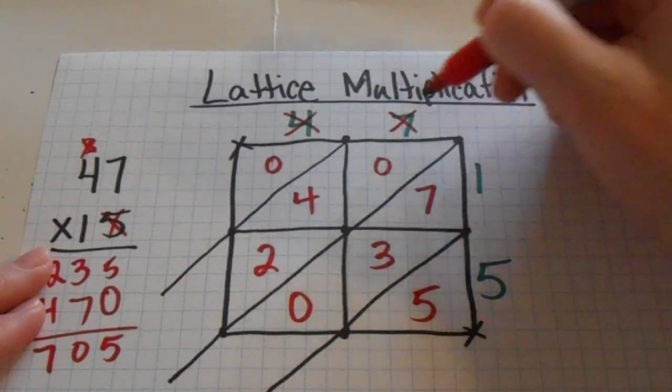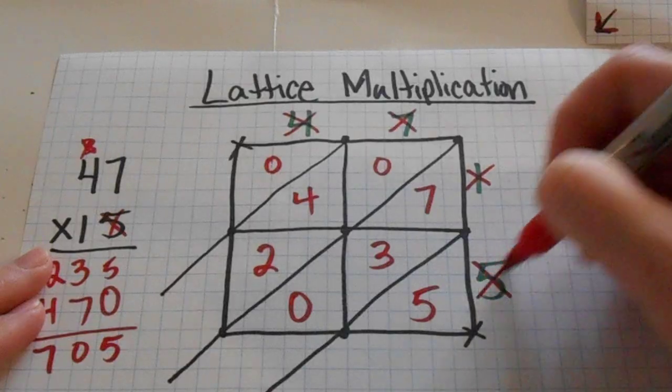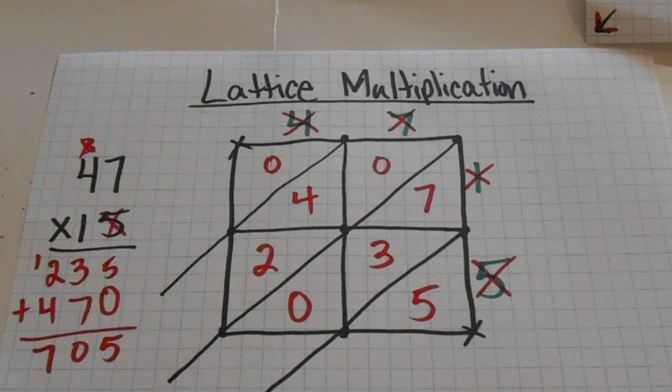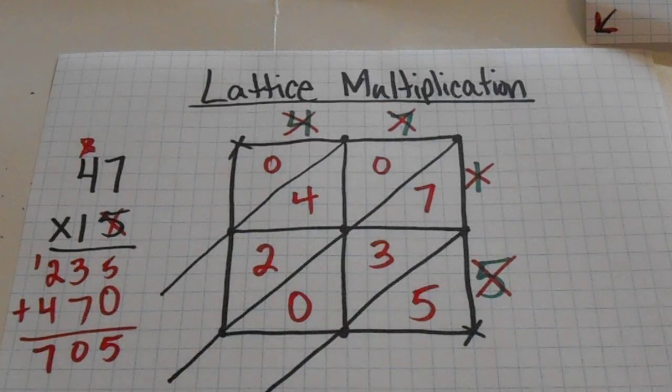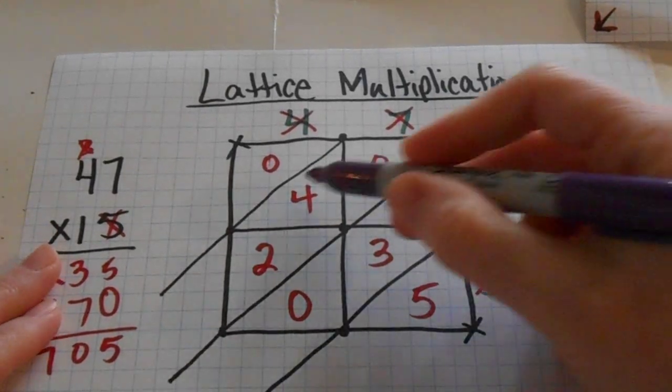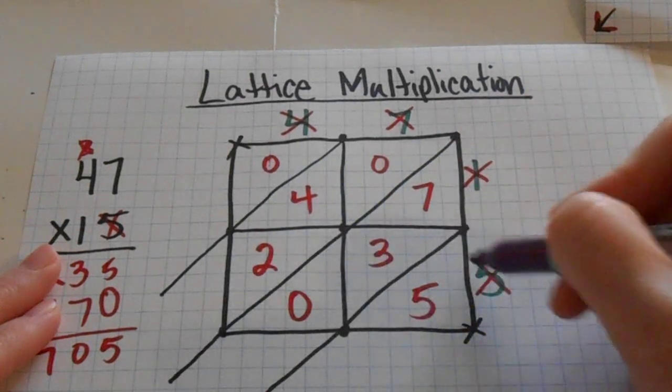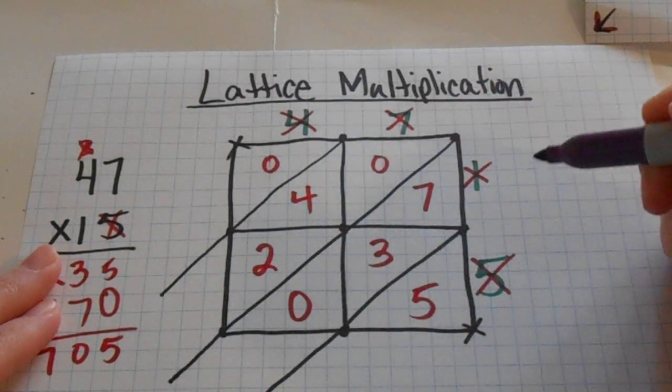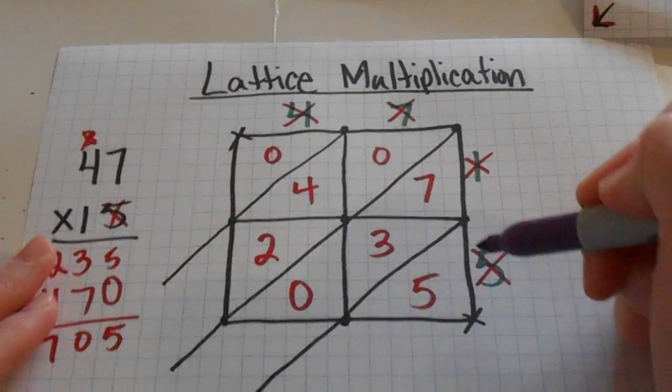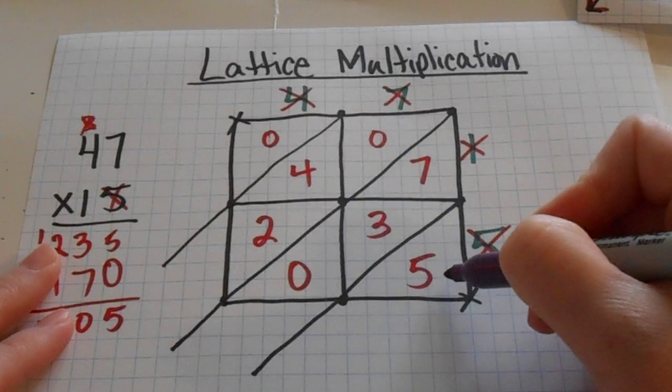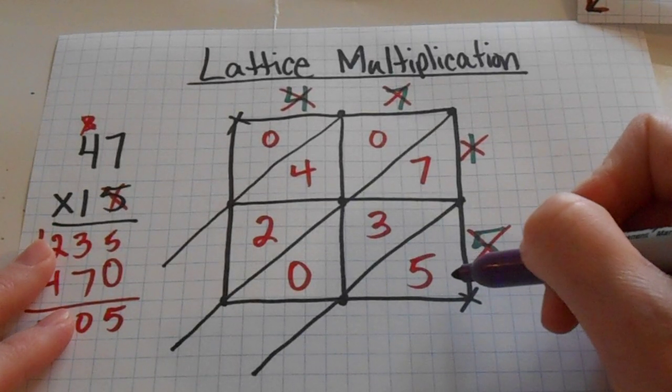I'm going to cross these numbers out that are on the outside and I'm going to show you why in a minute because sometimes those extra numbers can get confusing during this next step. The next step is to add. I've got all of these numbers inside my boxes and I do not want to add these numbers that are outside the box so that's why I cross them out.